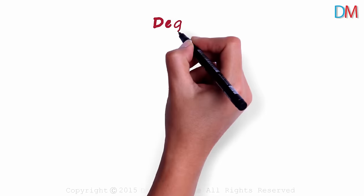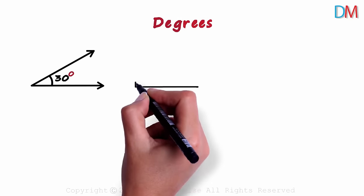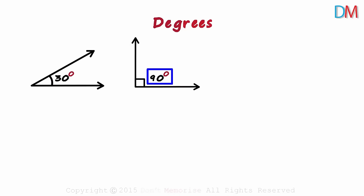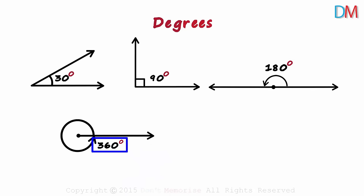In the previous video, we looked at how angles are measured using degrees. This angle would measure around 30 degrees, a right angle would measure 90 degrees, a straight line 180 degrees and one complete rotation 360 degrees.